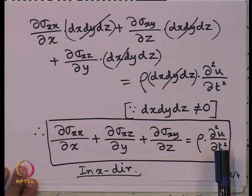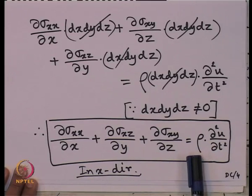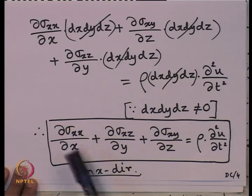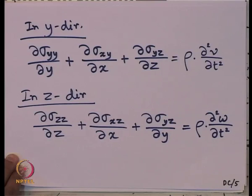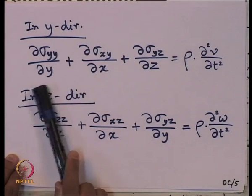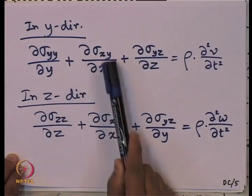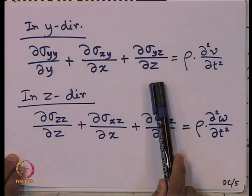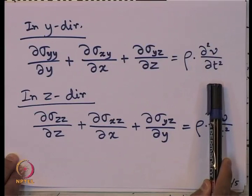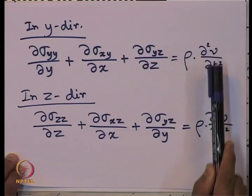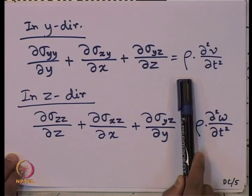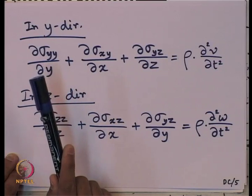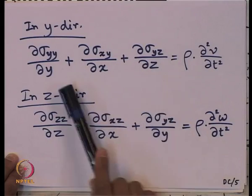This parameter del² u / del t² indicates the acceleration in x-direction, sigma_xx is the normal stress along x-direction, and sigma_xz and sigma_xy are the shear stresses. Similarly, for the y-direction: del sigma_yy by del y plus del sigma_xy by del x plus del sigma_yz by del z equals rho times del² v by del t², where v is the displacement in y-direction, sigma_yy is the normal stress, and sigma_xy and sigma_yz are shear stresses.